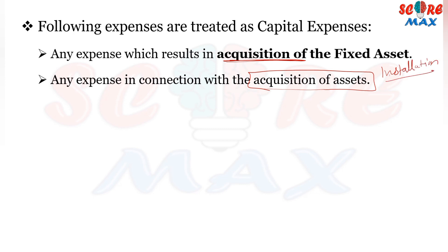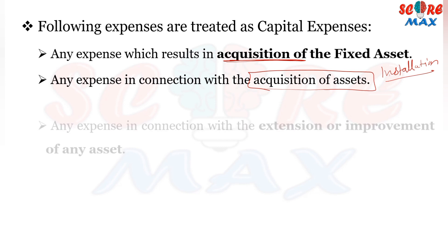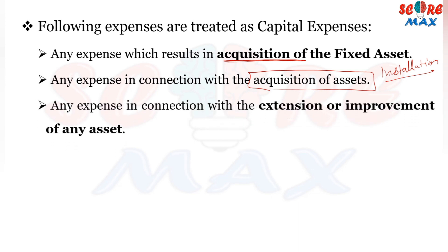The next category is any expense in connection with the extension or improvement of any asset. We should keep in mind this key word: extension or improvement. For example, if we have a printing machine and we extend or improve it, that expense becomes capital expenditure.